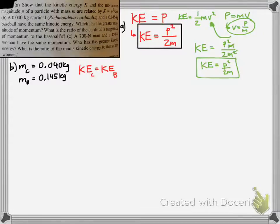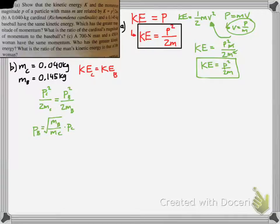Using what we solved for in part A, you'll have the two kinetic energies equal to one another: KEc = KEb. Now we're interested in the ratio of momentum, so let's solve for the momentum of the baseball. Multiply 2m to both sides—remember the m's are different, so the 2's cancel but the m's stay the same. Then I get p², and I take the square root.